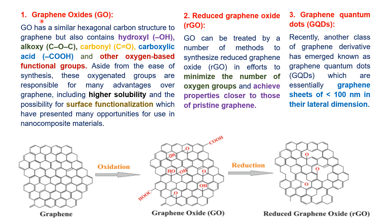The first derivative is graphene oxide. It has a similar hexagonal carbon structure to that of graphene, but it contains hydroxyl, alkoxy, carbonyl, carboxylic acid, and other oxygen-based functional groups.